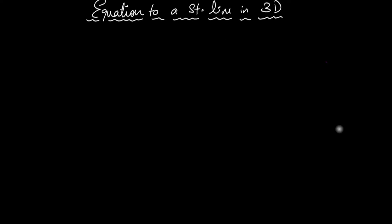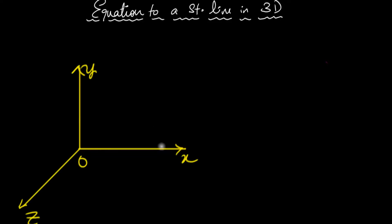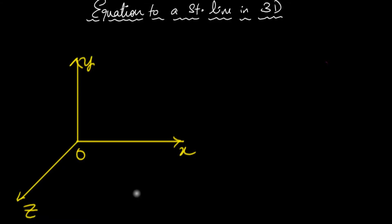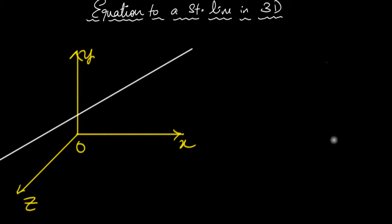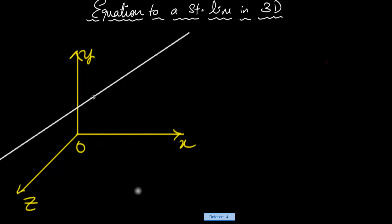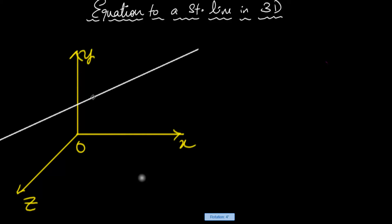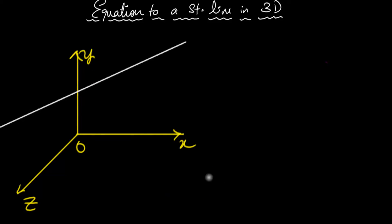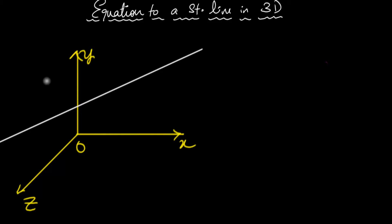In this math episode, we're going to look at the equation of a straight line in three dimensions. Here is my three-dimensional space and here is my straight line. The question is: suppose I am imagining a specific straight line with a specific orientation and a specific position, and I want to convey that information to you analytically without drawing. How do I convey that information?